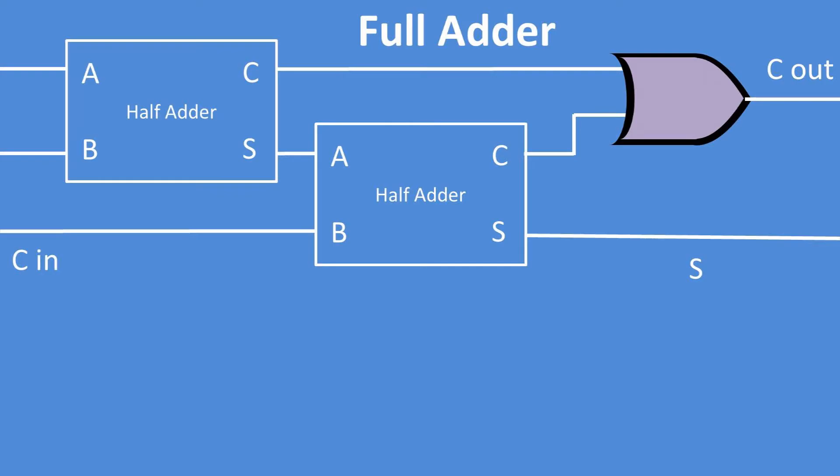This full adder is a half adder that has an input of A and B, and the carry is hooked into an OR gate, and the sum bit is tied into an A input for another half adder. The second half adder also has a B input connected to a carry-in bit from a previous operation. This half adder outputs to an OR gate with an output of a carry out, and also outputs a sum bit.